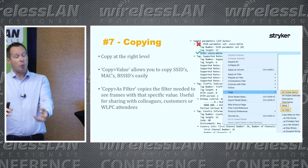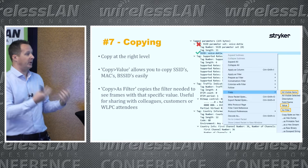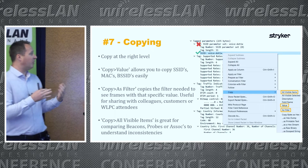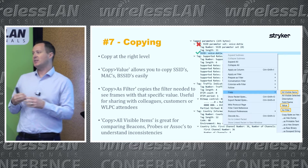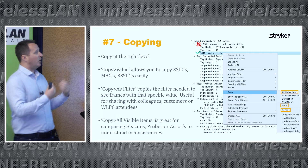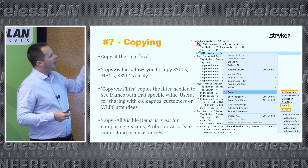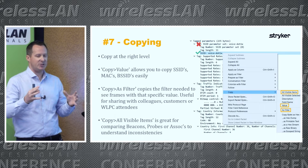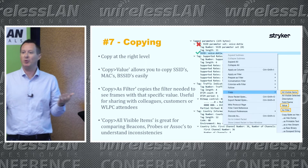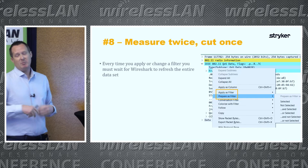One copy option I use a lot that many people don't know about is 'Copy All Visible Items'. If a client connects to one AP but not another, I need to spot the difference. I get a beacon, probe response, or association response from both APs, expand all information elements, right-click and choose 'Copy All Visible Items' — that dumps the entire frame content to clipboard. Paste both into Notepad++ and compare them. That solves an awful lot of customer problems very quickly.